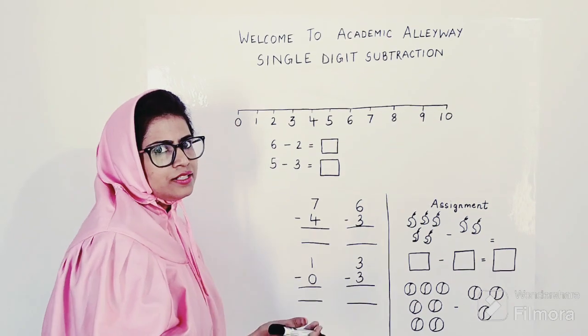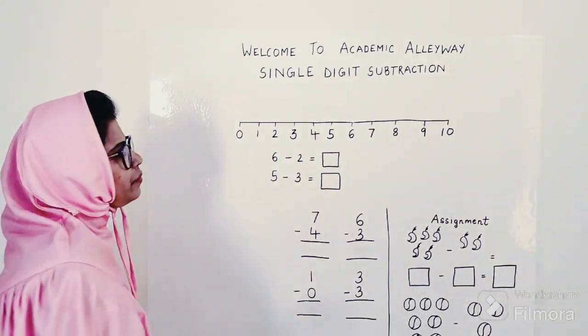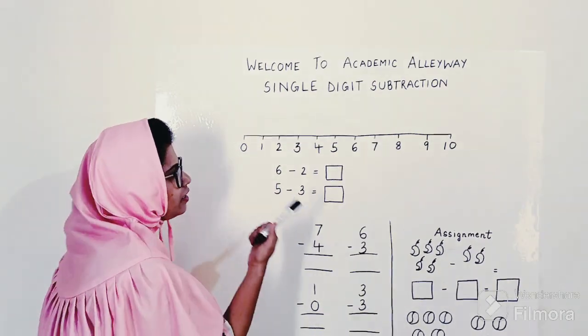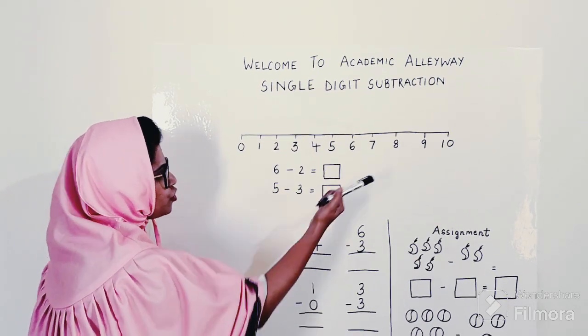This way they will start to understand what subtraction actually is, what you mean by the word subtraction. Then start off with the number line method. How will you do the number line method?